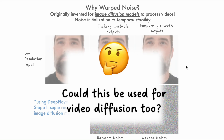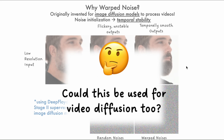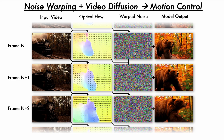And so, following that paper, we wonder: could this be used for video diffusion too? And, well, short answer — because this paper exists — is yes. We take a bunch of video frames and we extract their optical flows. From their optical flows, we get warped noises, and we take all of these warped noises and feed them into a video diffusion model to get our final output.